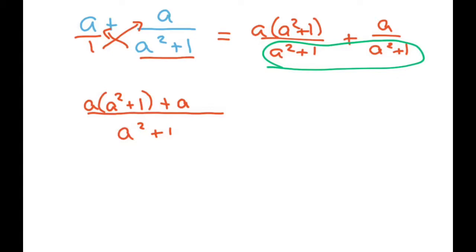Now let's go ahead and expand this a little bit. We get a cubed plus a plus a. All right. And this is just a. So this is over a squared plus 1. So that's going to be a cubed plus 2a over a squared plus 1.